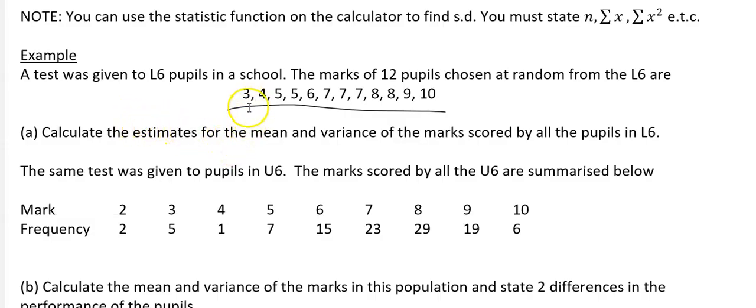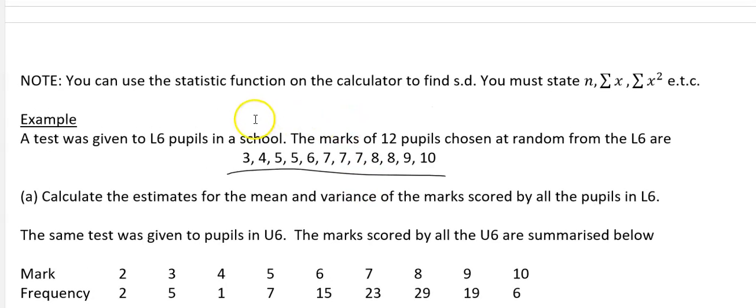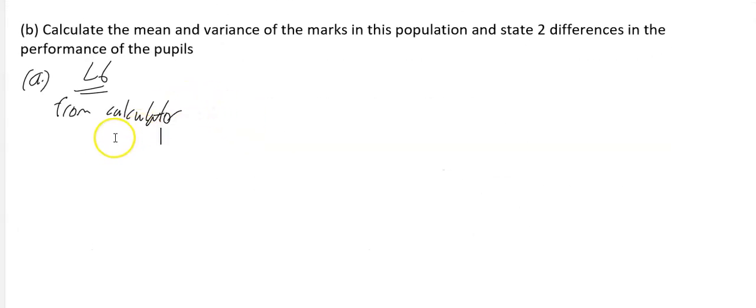If you want, you can do 3 with frequency 1, 4 with frequency 1, 5 with frequency 2, 6 with frequency 1, 7 with frequency 3, etc. But it's just as quick to put them in individually as single values.